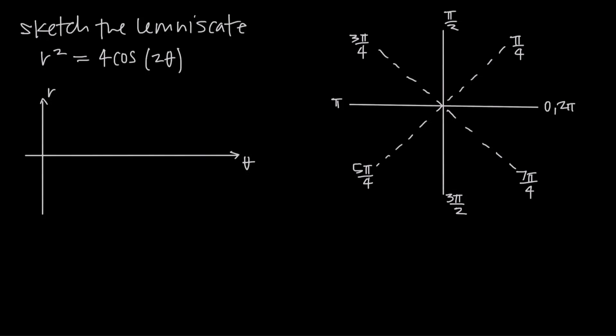In this video, we're talking about how to sketch a polar curve — specifically how to sketch a lemniscate. The equation we've been given is r squared is equal to 4 cosine of 2 theta.